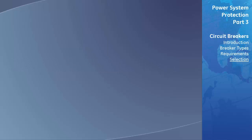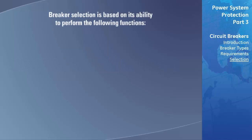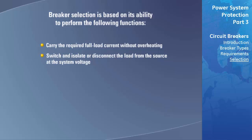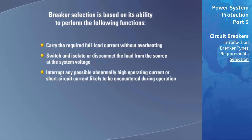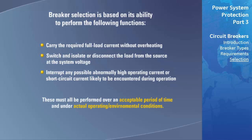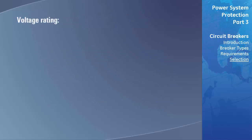The selection of any circuit breaker is based on its ability to carry the required full-load current without overheating, switch and isolate the load from the source at system voltage, and interrupt any possible abnormally high or short-circuit current likely to be encountered during operation. These functions must be performed over an acceptable period of time and under actual operating and environmental conditions. To select the correct breaker, we must examine its ratings.